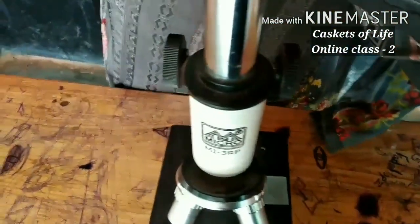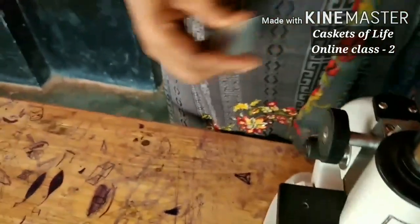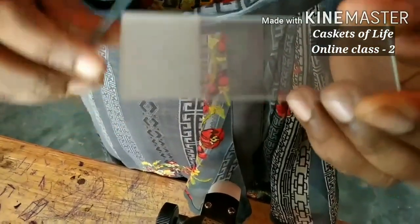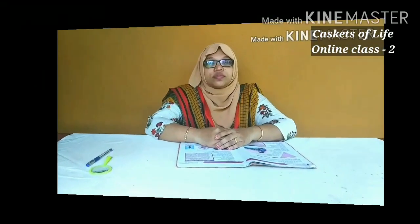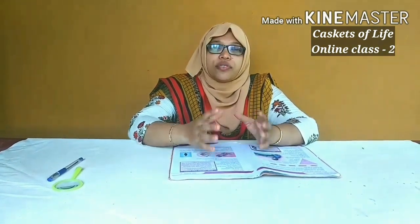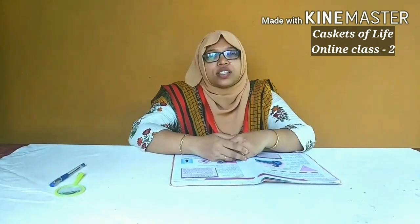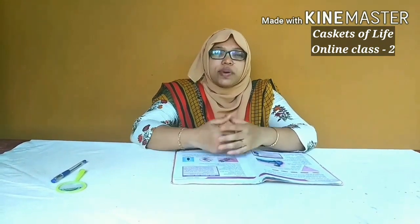Now let's introduce a microscopic slide. This is a slide — we can place a sample on the microscope slide. This is a permanent slide, where the object is already preserved and stored. Now we have seen the different parts of a microscope and how we can use it.